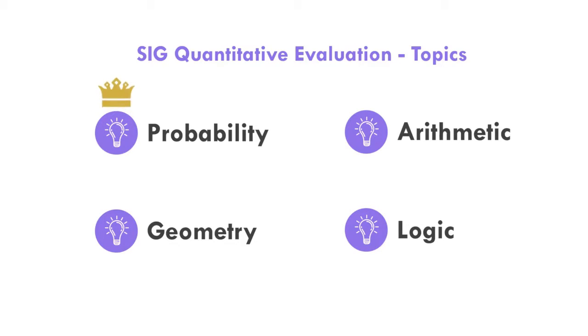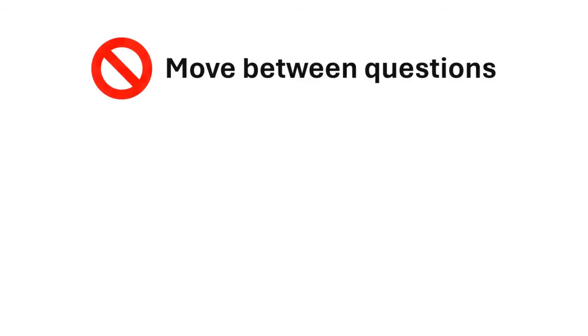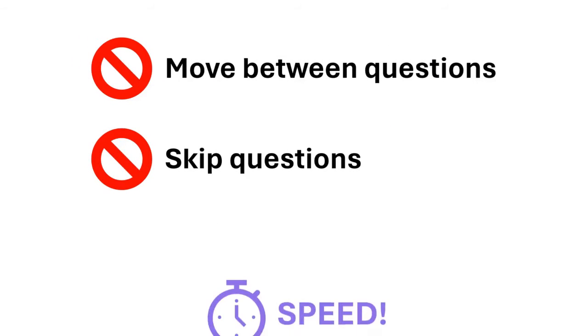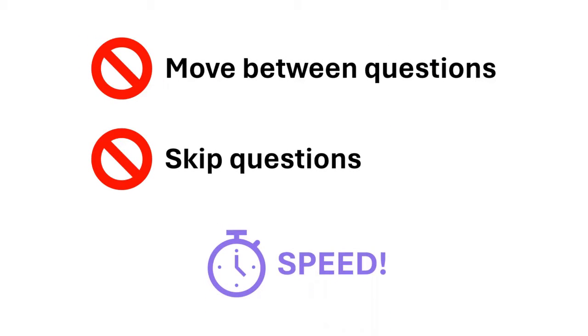Probability is certainly going to be the most common question type, but you should be well prepared for the other three types if you want to maximize your score. In addition, unlike other assessments by SIG, you will not be able to move between questions or skip them, so solving speed is going to be much more significant for your success. Now let's briefly go over each topic, including some sample questions.